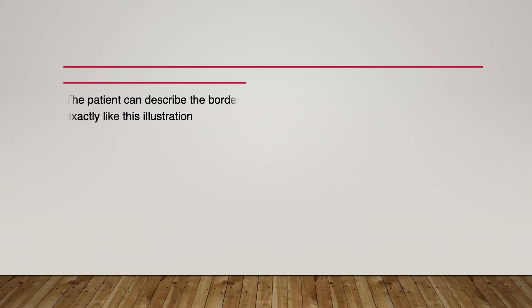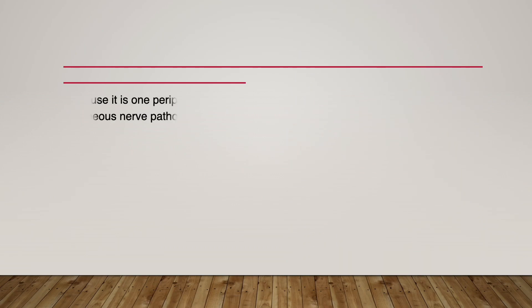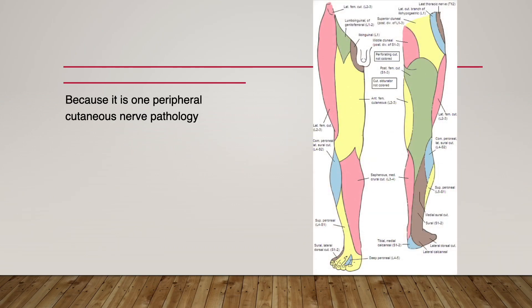The patient can describe the border exactly like this illustration. That is because the cutaneous nerve is very discriminative and precise in localizing the pain area, compared to the sensory nerve of the tendon and deep structures.